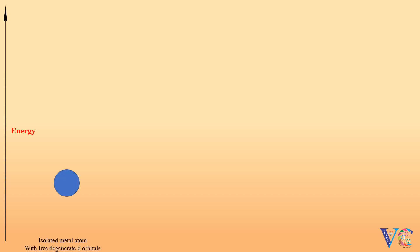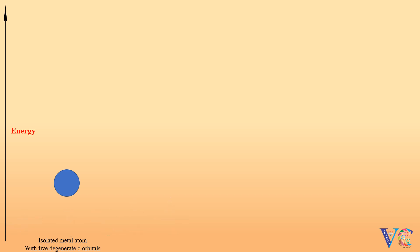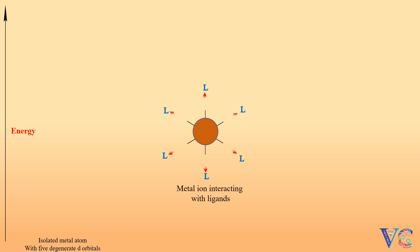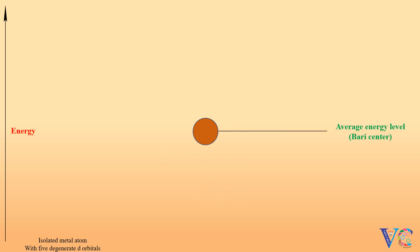Isolated metal atom with five degenerate d orbitals. Ligands approaching the metal. As a consequence, the metal acquires a little higher energy. There takes place interactions between the metal ion and ligands. As a consequence, splitting of d orbitals takes place.